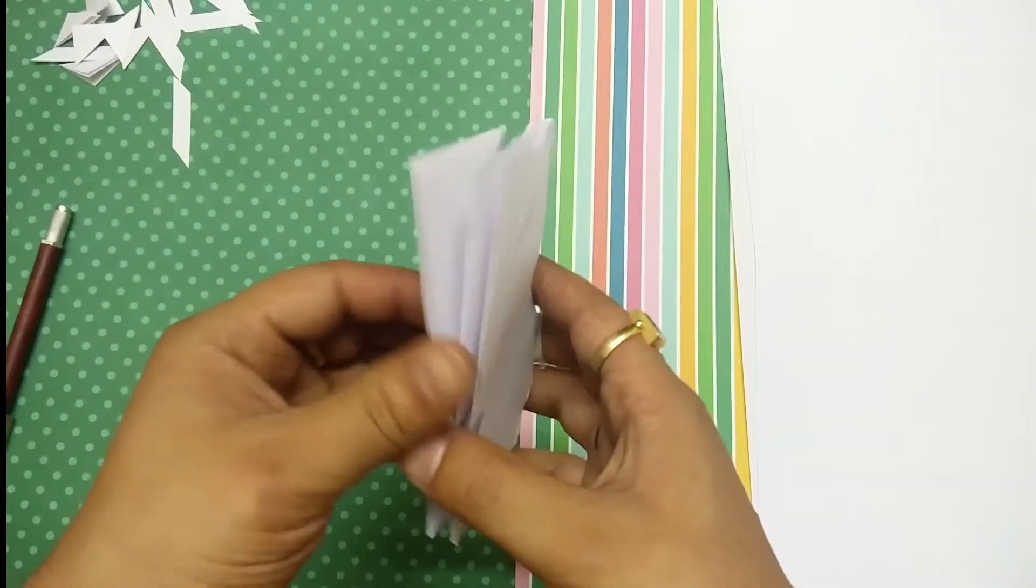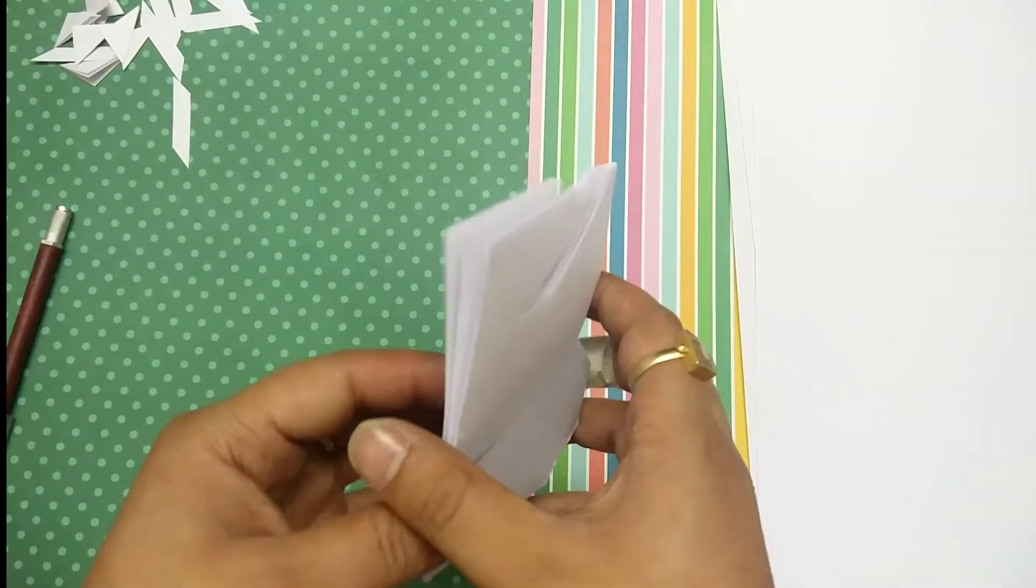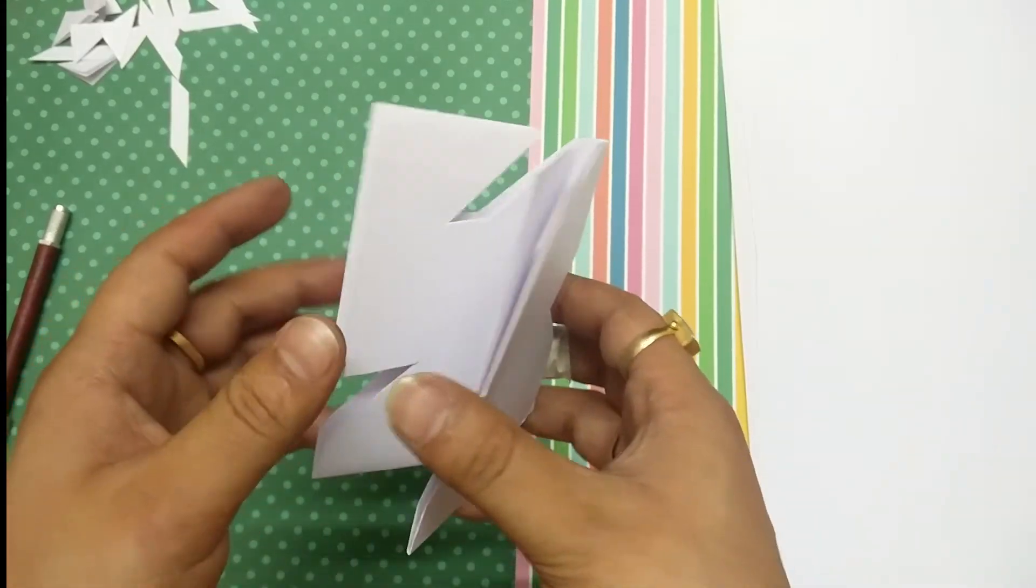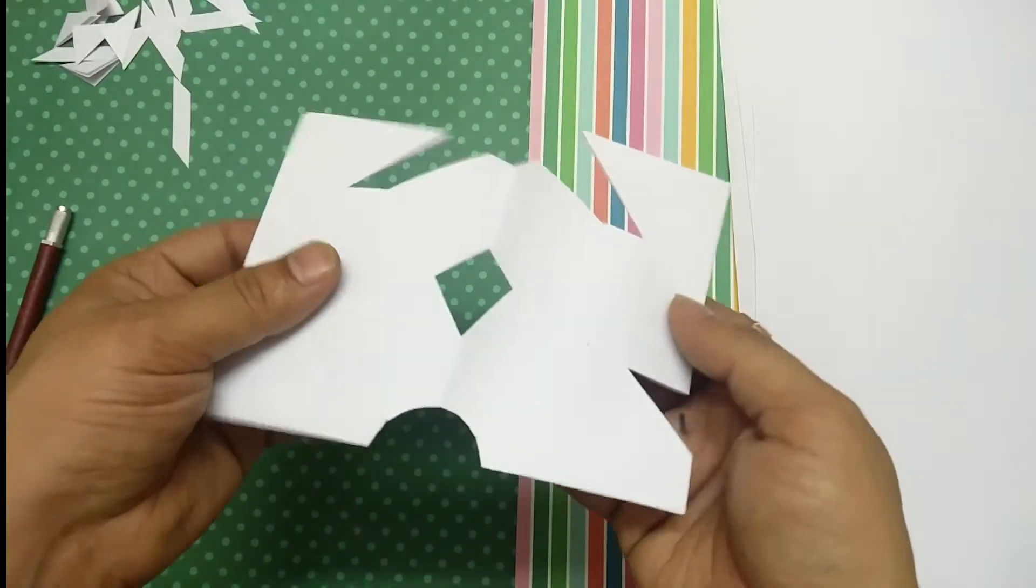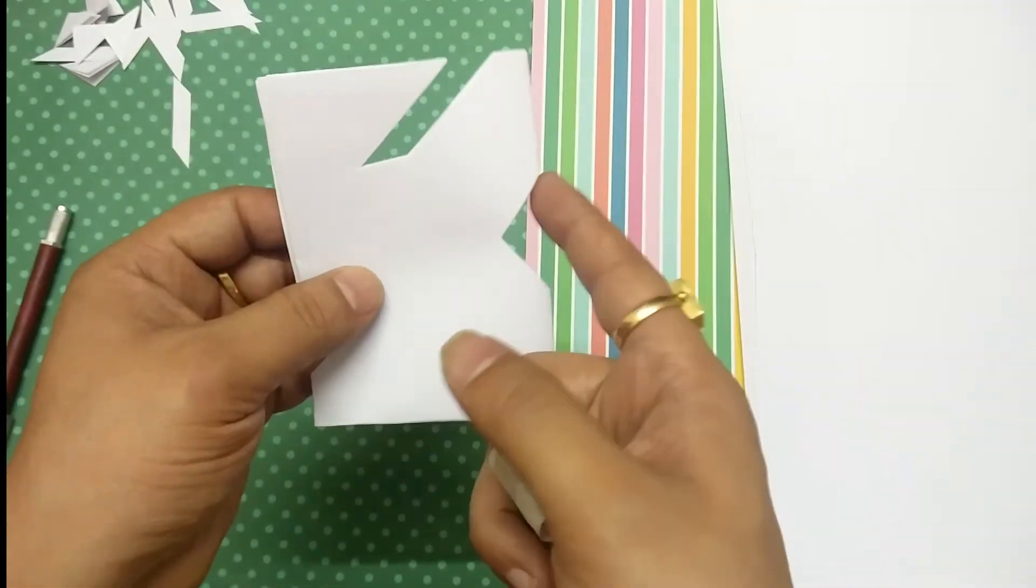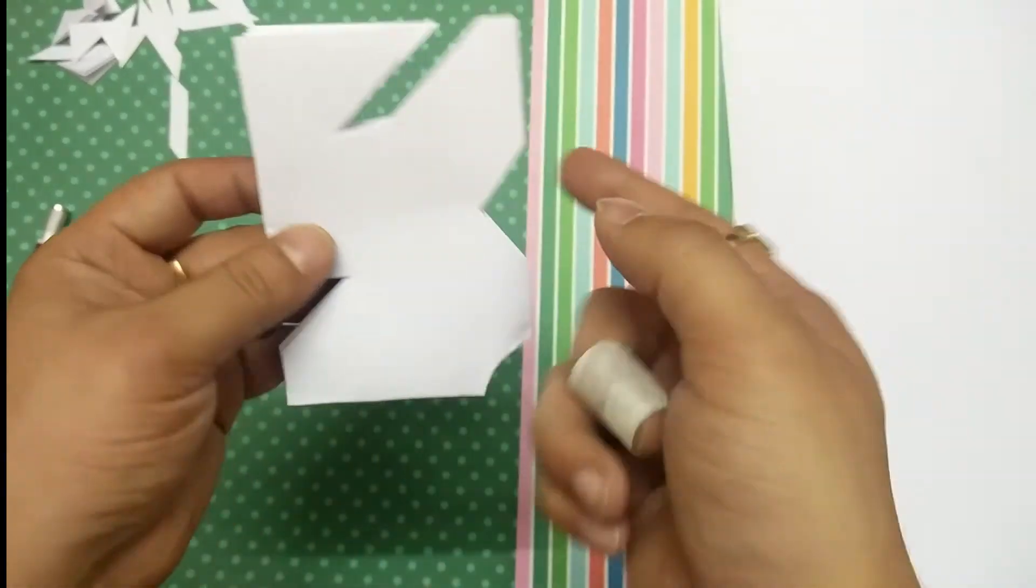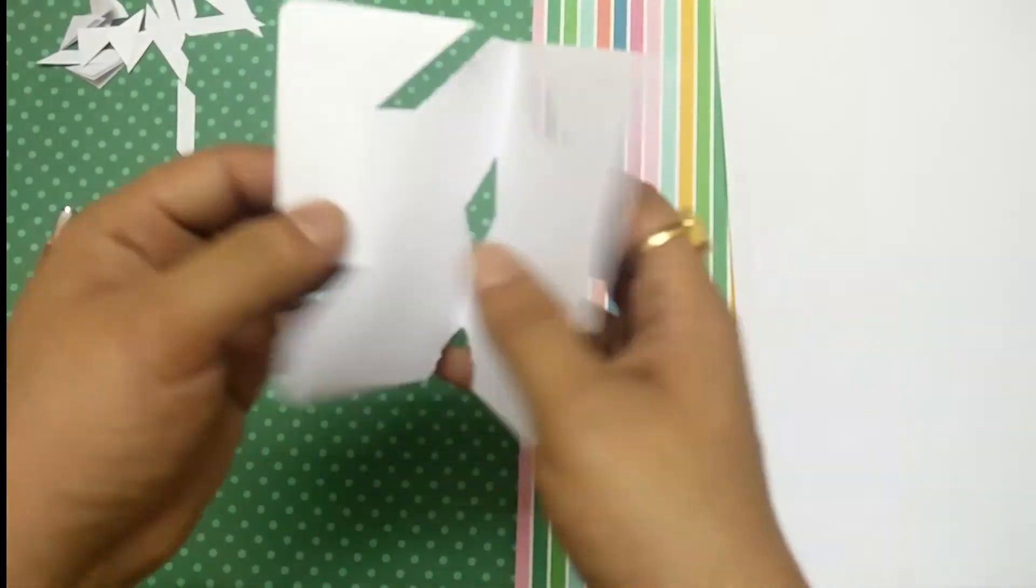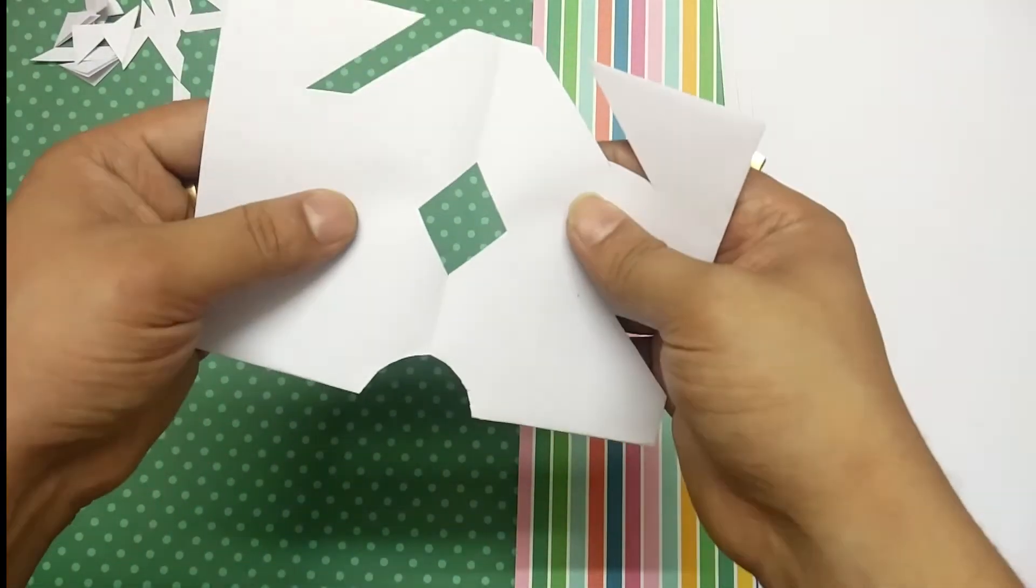Now the whole point of making these cuts is to understand on which surface which cut goes where and how the whole thing comes up. You see this triangle, this V section has actually become a rectangle kind of shape.